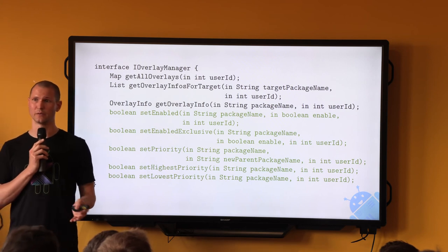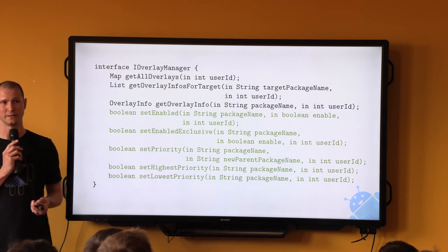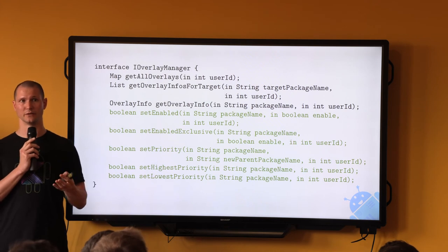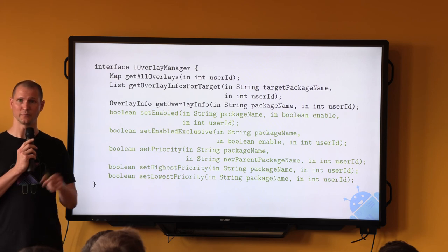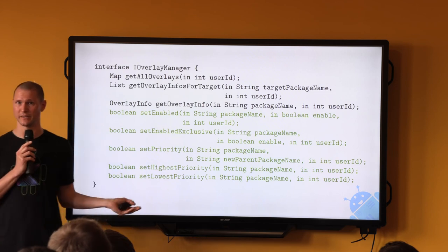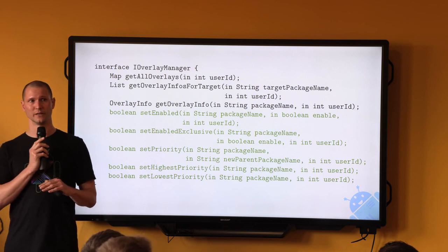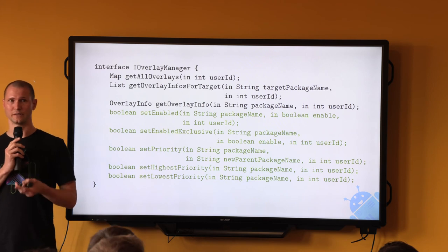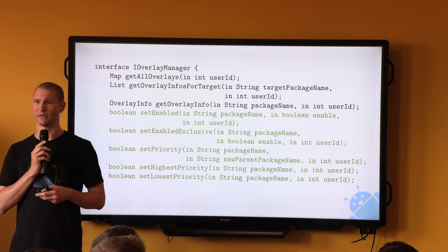The setPriority methods change the order in which overlays are loaded. This actually replaces something that used to be part of the overlay tag in the manifest — there was an attribute called priority, but that's been deprecated in favor of this. The reason you would care about the order in which overlays are loaded is if you have several overlays modifying the same resource with the same set of qualifiers, in which case it makes total sense to be aware of that.